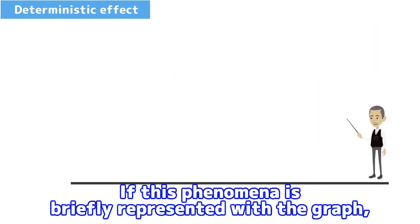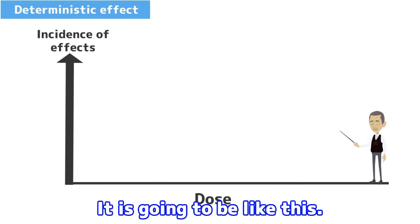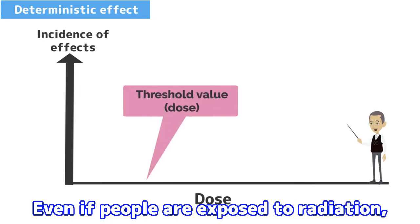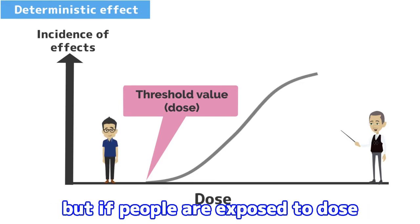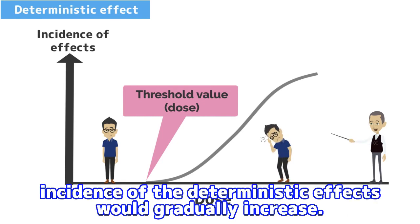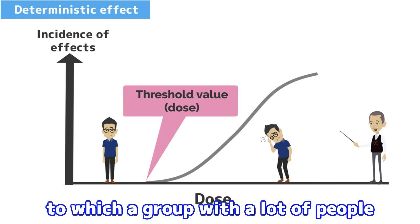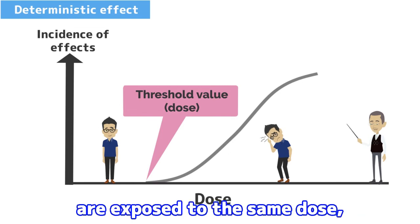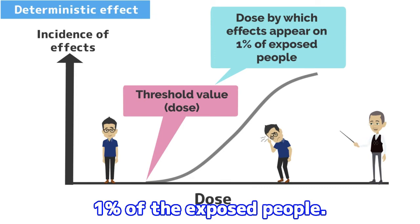If this phenomenon is briefly represented with a graph, it looks like this. Even if people are exposed to radiation with less than the threshold dose, no deterministic effects would appear. But if people are exposed to a dose more than the threshold dose, the incidence of deterministic effects would gradually increase. Specifically, the ICRP defines the threshold dose as the dose at which, when a large group of people are exposed to the same dose, the deterministic effects would appear on 1% of the exposed people.